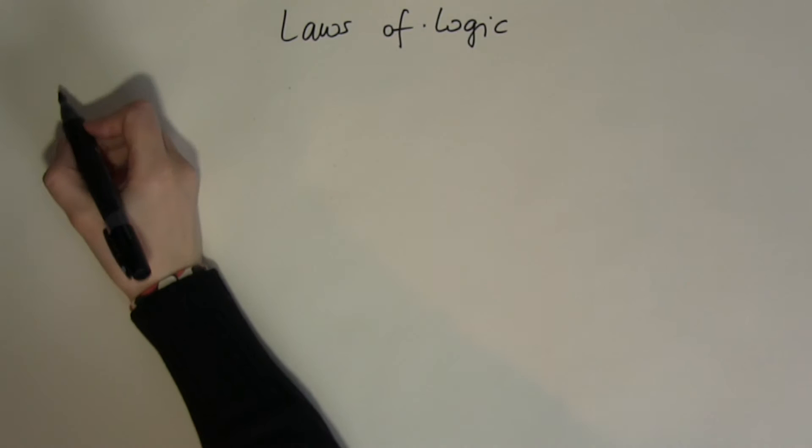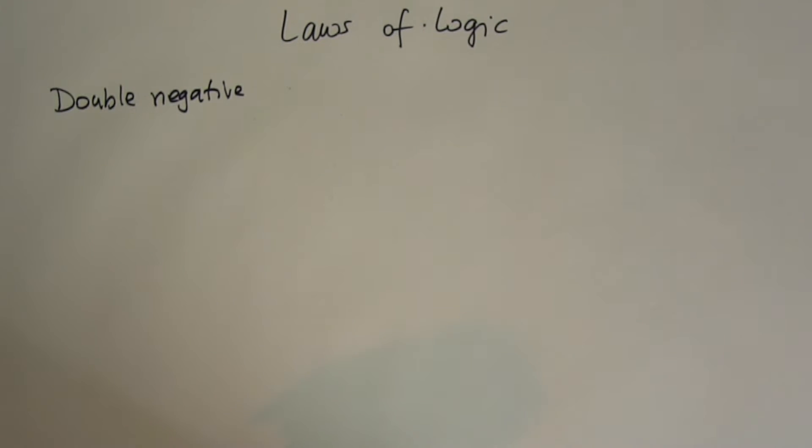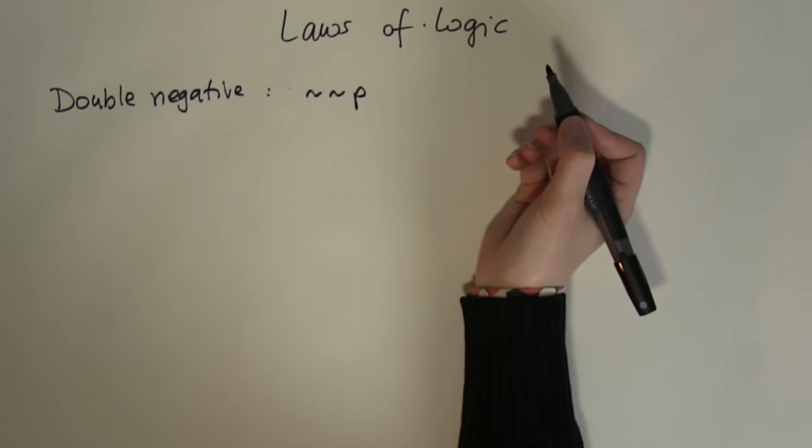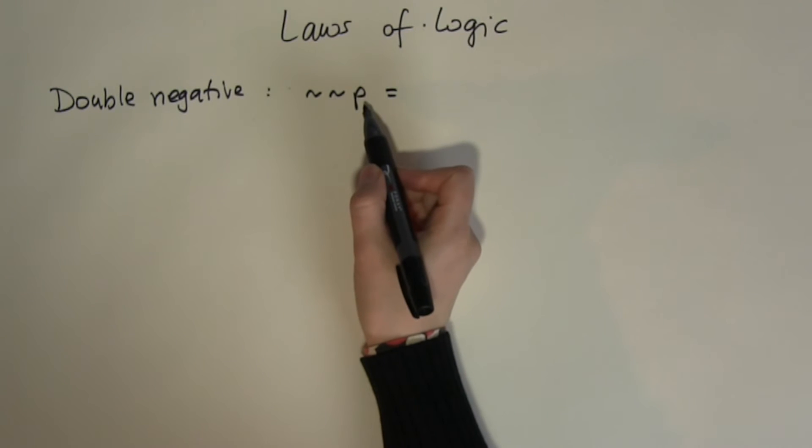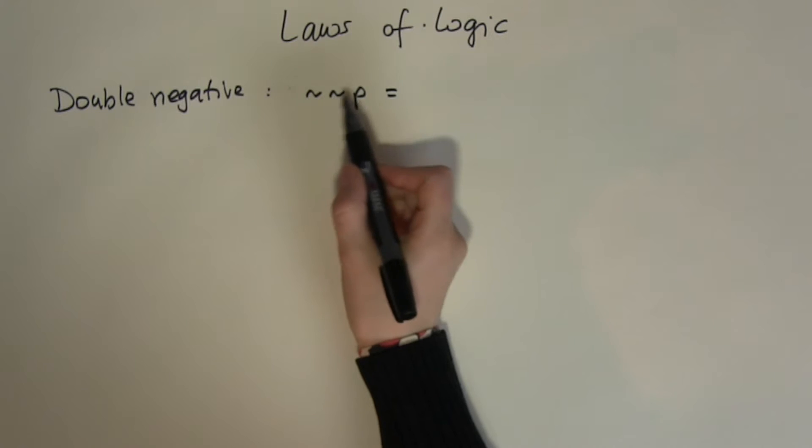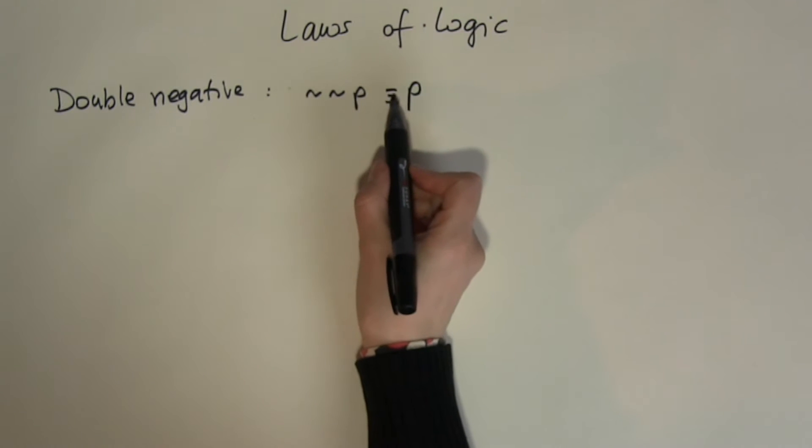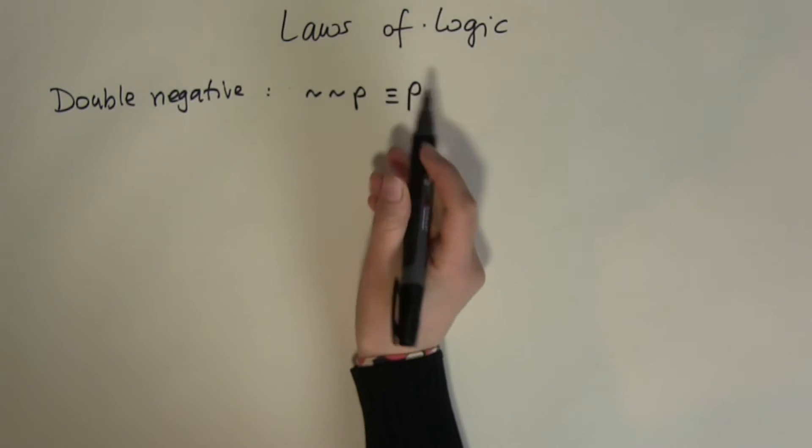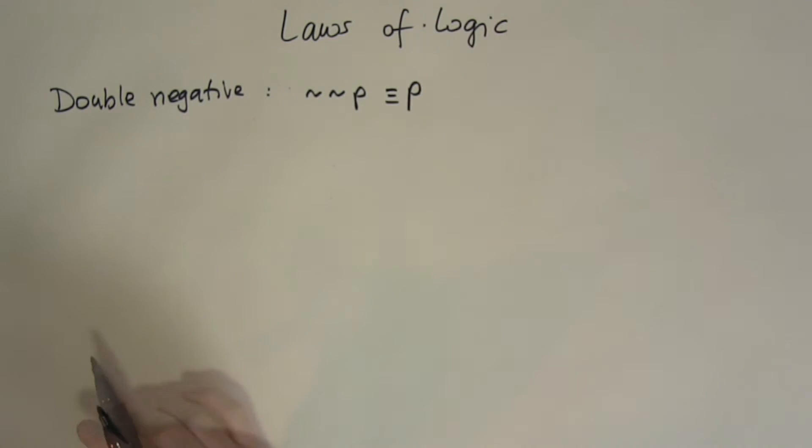The first law is called the double negative. Basically, what happens if I apply the negation or the NOT twice to the same input? Well, what is not not P? If P is true then not P is false and not false is true. So I end up with the original value that I started with. Remember that these three lines together mean logically equivalent, not just simply equal. So it doesn't matter if I write not not P or P, I am talking about exactly the same thing.